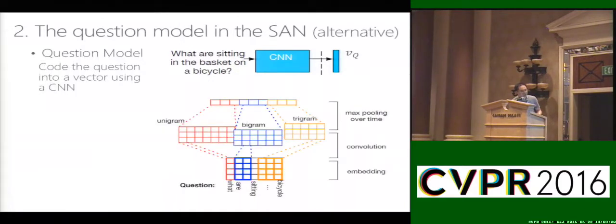As an alternative, we can also encode the question using a convolution network. In this convolution network, we use a sliding window to scan over the whole question, and then we extract different local information and then do a global pooling to construct a global semantic feature to represent the question.